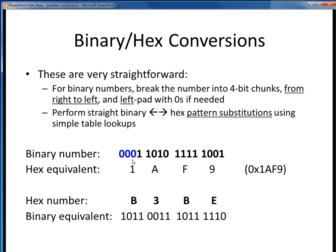So binary 0001 is hex 1, binary 1010 is hex A, binary 1111 is hex F, and binary 1001 is hex 9. We'd probably represent the number with a leading 0x, as shown here, but that's all there is to it.